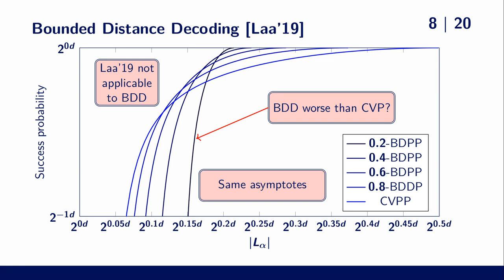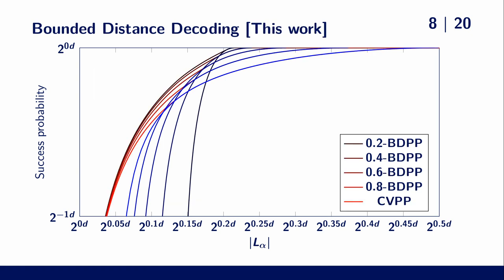Our new analysis resolves all of this and shows that the success probabilities have the following curves. This also shows that BDD is indeed easier for this algorithm than CVP, even though they converge in the low memory regime.